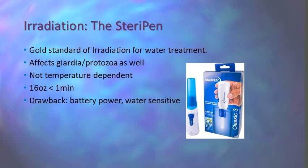Cue the SteriPen. This is the gold standard for irradiation for water treatment. It's actually such a high dose of UV light that it affects Giardia and protozoa as well, and the SteriPen is not temperature dependent — it will sterilize your warm water, room temperature water, and cold water equally effectively. It can sterilize water in less than a minute for 16 ounces. The drawback for the SteriPen is it's battery powered, and unfortunately the battery mechanism inside is water sensitive. It's in a water-resistant casing, but if you crack the casing and water gets into the power source, you're going to be out one SteriPen. It's very effective but there are more hardy ways to take water treatment.